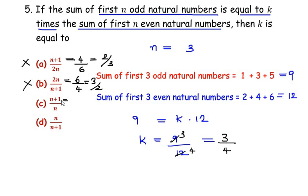Now option C: (3+1) as 4 over 3, so this is also not the answer. Let's check the last one. n we have taken as 3 over (3+1) is 4, so k equals 3/4. Our answer is option D.